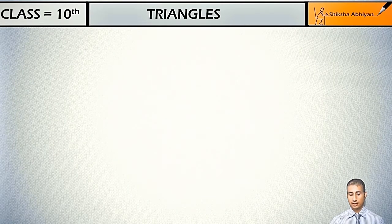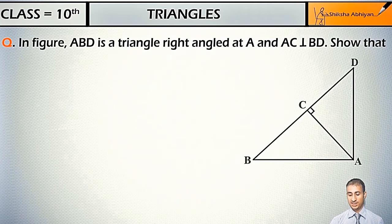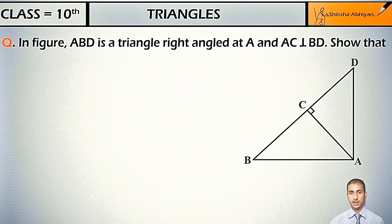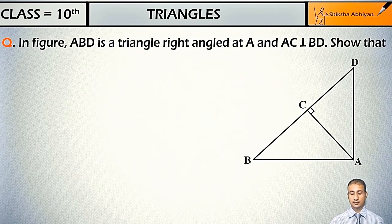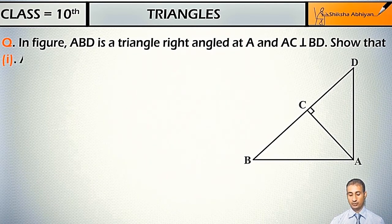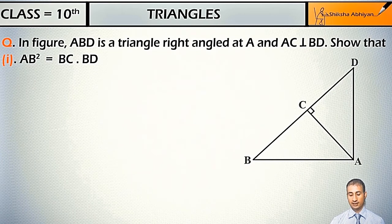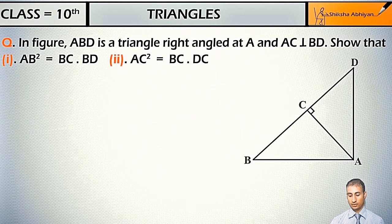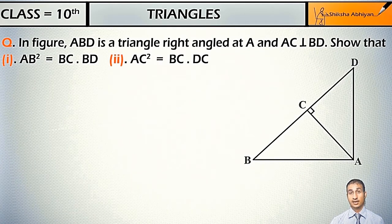Student, see the question. In the figure, ABD is a triangle right angled at A and AC perpendicular to BD. Show that: (i) AB² = BC·BD, (ii) AC² = BC·DC, and (iii) AD² = BD·CD.